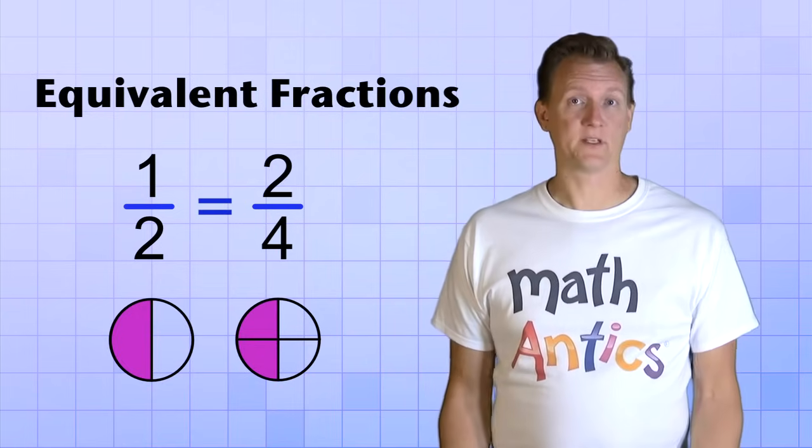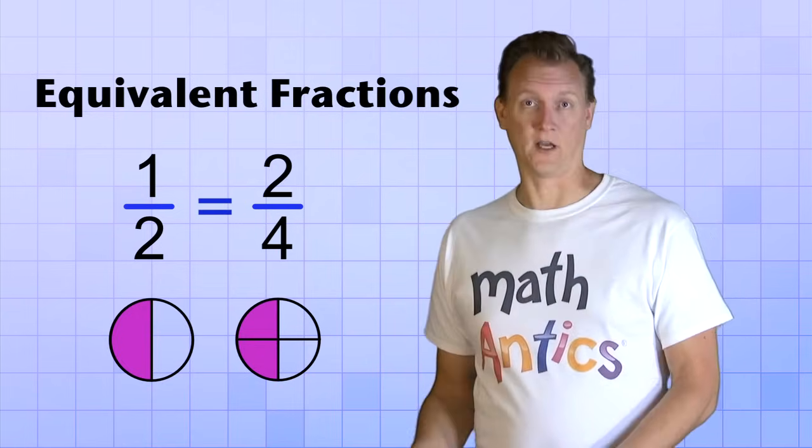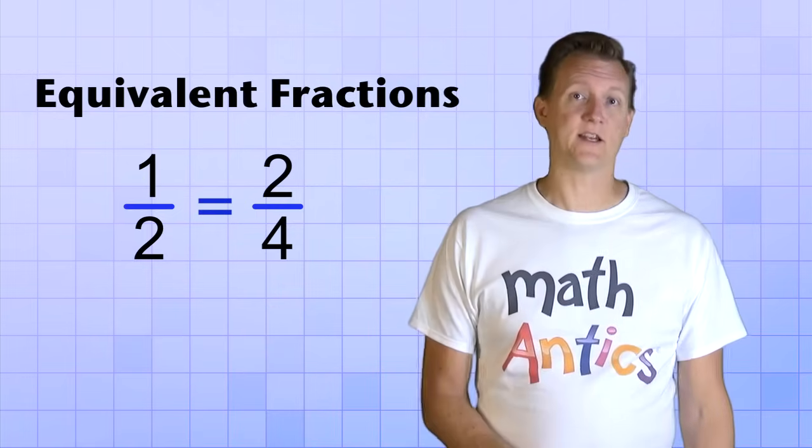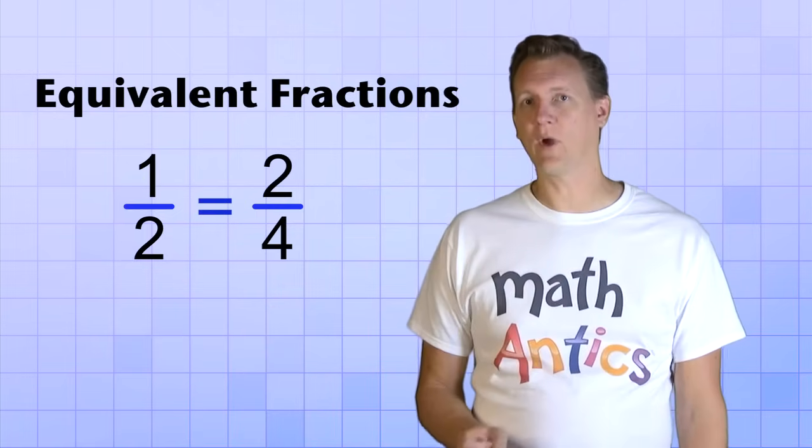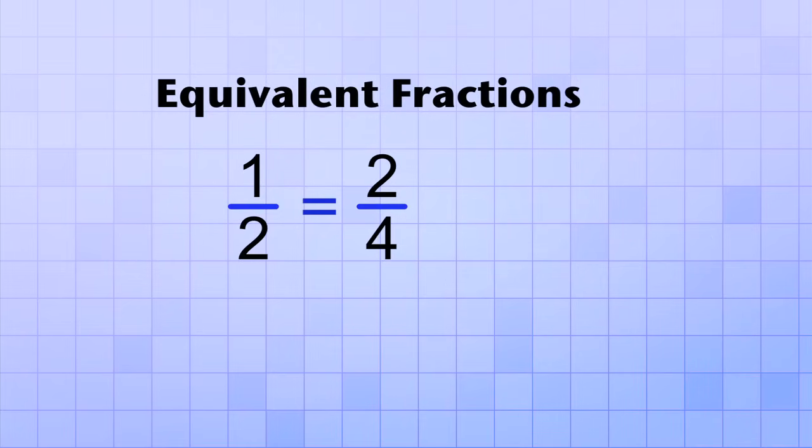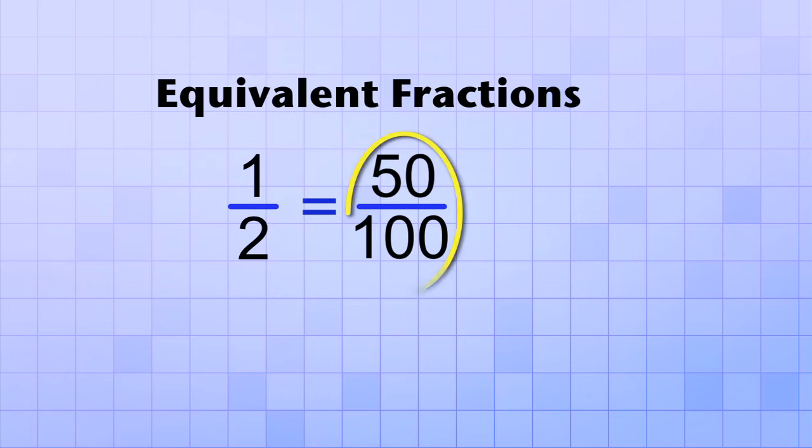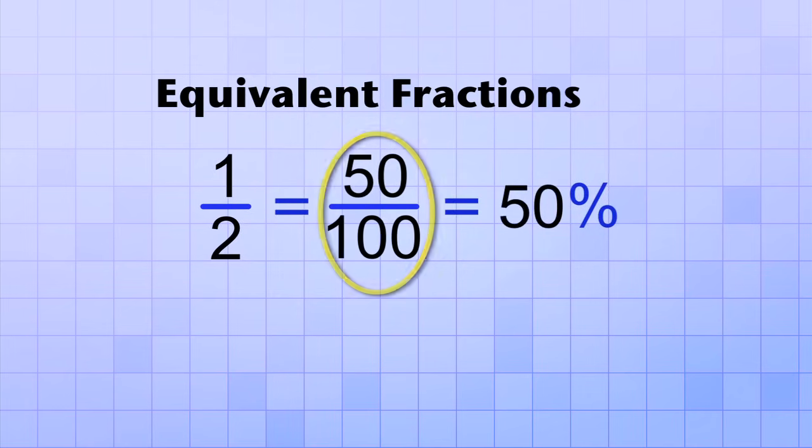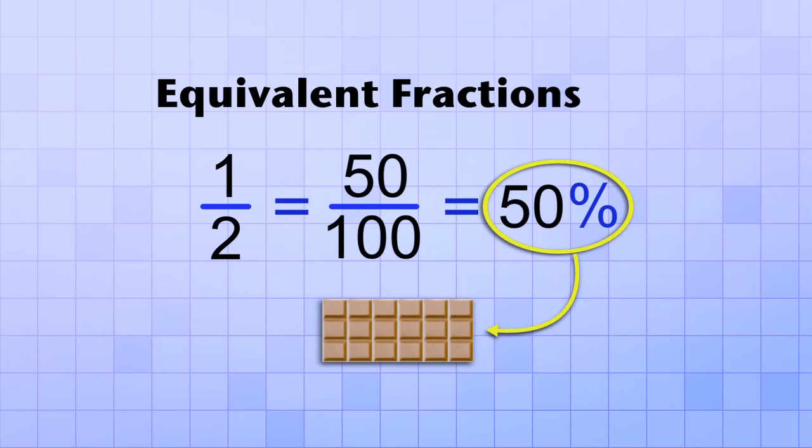And that's how percents can be used even if the total isn't 100. A percent is an equivalent fraction that tells you how much you'd have if the total was 100. In the case of 1 half, another equivalent fraction would be 50 over 100 because 50 is half of 100. But as you learned in the last video, 50 over 100 is a percent. And that's why 50% of a candy bar is the same as half of a candy bar.